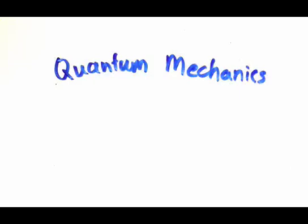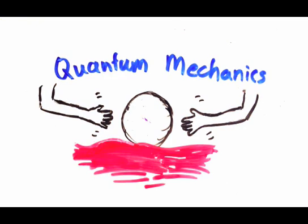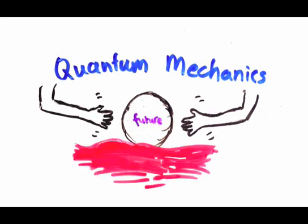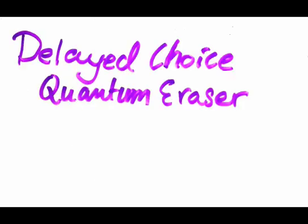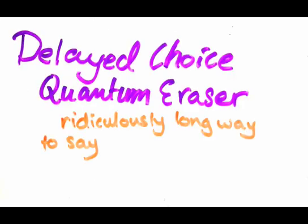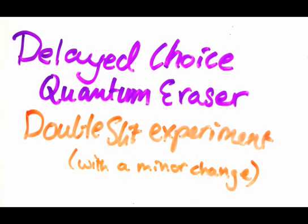I thought I'd make a short video about some very strange looking results in quantum mechanics. The result looks as if quantum mechanics knows what's going to happen in the future, and those future events can affect how things behave now. The experiment that shows this gets called the delayed choice quantum eraser, but it's really just the double slit experiment with a minor change, so I'll explain it to you.